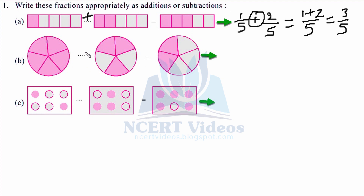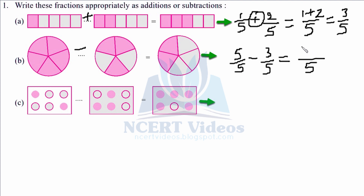In the second part, five parts — the complete circle — are shaded, and in the second figure three parts are shaded, and in the final only two are left. So it means subtraction. Five parts minus three parts gives you two parts. Mathematically: five over five minus three over five. Taking LCM of five, we get five minus three equals two, so the answer is two over five, as also seen in the final picture.